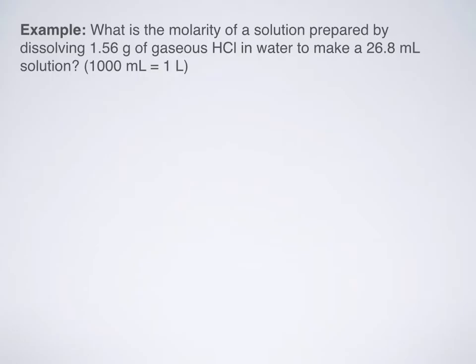Example, what is the molarity of a solution prepared by dissolving 1.56 grams of gaseous HCl in water to make a 26.8 milliliter solution? And as a reminder, it says that there are 1,000 milliliters in one liter. All right, so there are a couple of very important things that we need to point out here. The first is, of course, since molarity is mentioned here, I'm going to have to use moles over liters, which is our molarity equation.